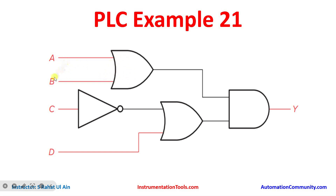A and B will be connected in parallel with each other implementing an OR logic gate. Similarly, C as a normally closed contact and D as a normally open contact will be connected in parallel. Then A plus B and C-NOT plus D will be connected in series, thus implementing an AND logic gate.